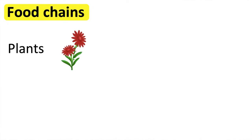Plants are known as producers. This means that they make their own food through the process of photosynthesis.